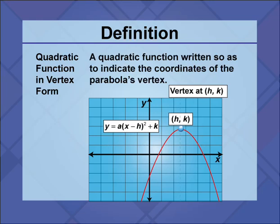A quadratic function in vertex form is a quadratic function written so as to indicate the coordinates of the parabola's vertex. In the graph of the parabola shown, the vertex has coordinates h, k.